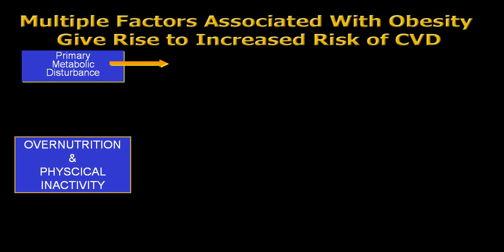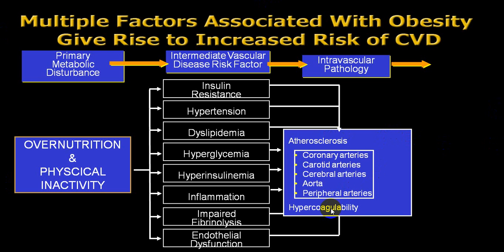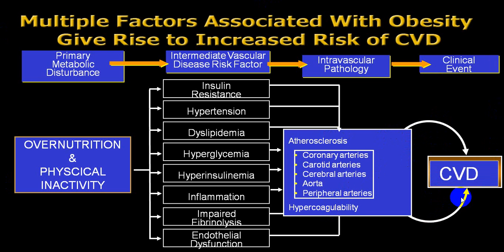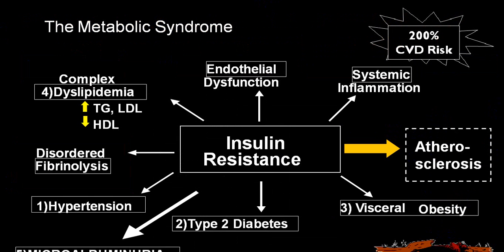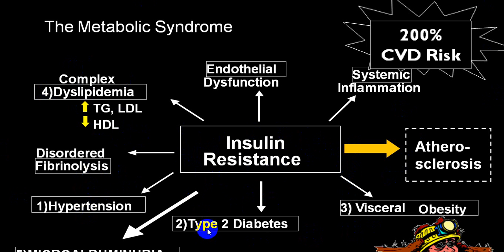Over-nutrition and physical inactivity are prime factors leading to insulin resistance, hypertension, dyslipidemia, hyperglycemia, hyperinsulinemia, inflammation, impaired fibrinolysis, and endothelial dysfunction — which accelerates atherosclerosis, increases hypercoagulability, and finally ends in cardiovascular disease and death. There is a 200-times increased risk of cerebrovascular disease secondary to insulin resistance. Hypertension, diabetes, visceral obesity, dyslipidemia, and microalbuminuria are all responsible for complications.